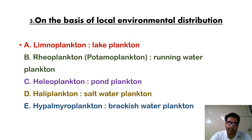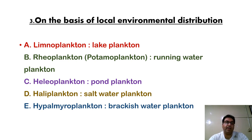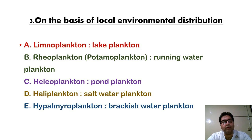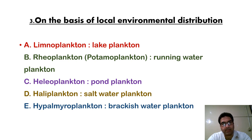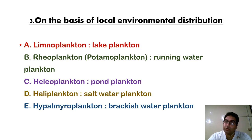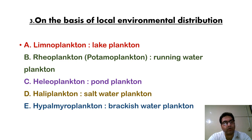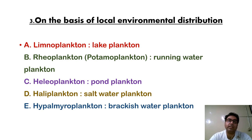On the basis of local environmental distribution — in which environment they are present — we call them limnoplankton if they are present in a lake, rheoplankton if they are present in running water, helioplankton if they are present in a pond, haloplankton if they are present in a salt water body, and hypalmeroplankton if they are present in brackish water.